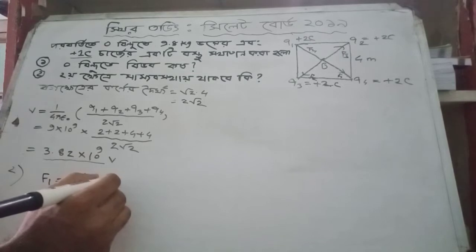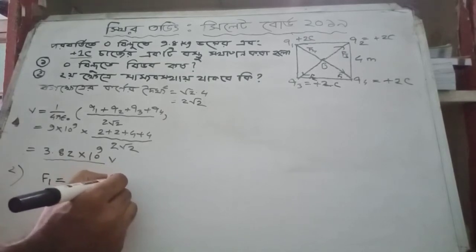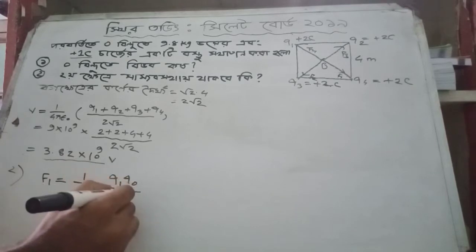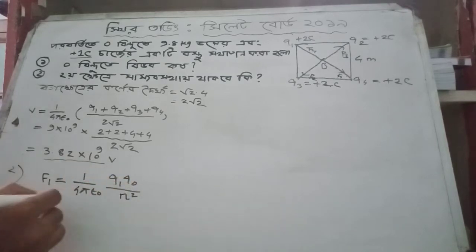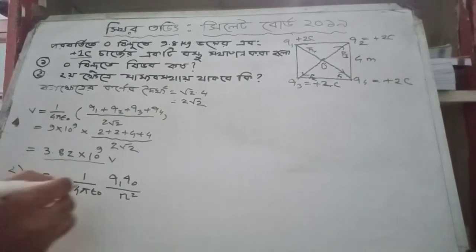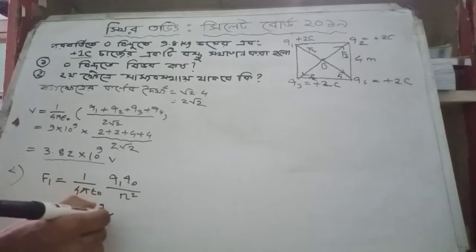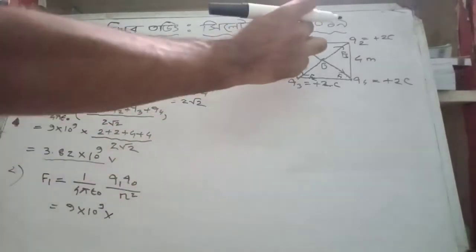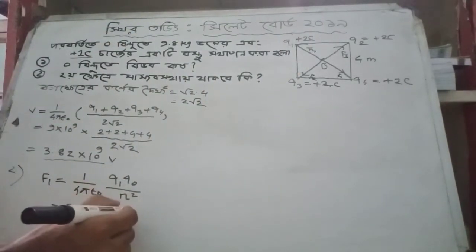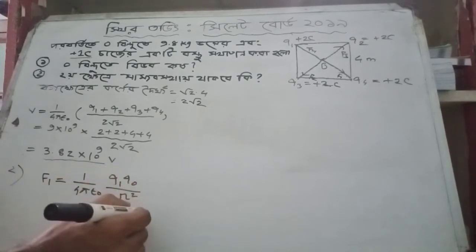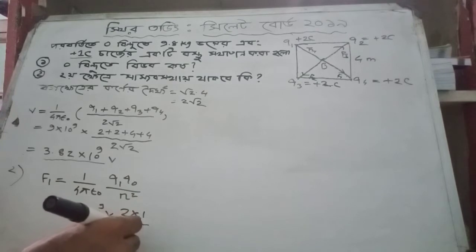The force formula involves q1, q0 divided by r square. Using Coulomb's law: F = (1/4πε₀) × (q1 × q0) / r².